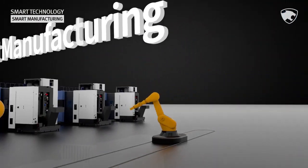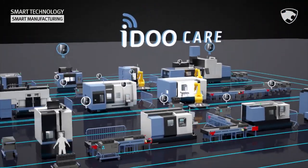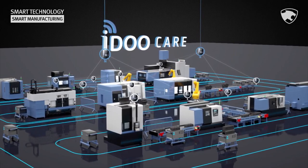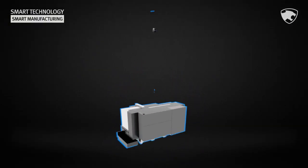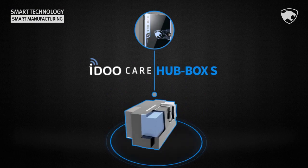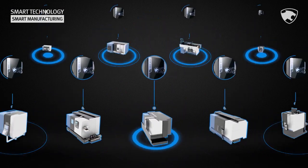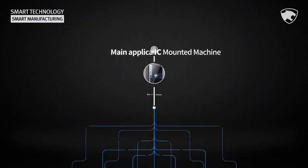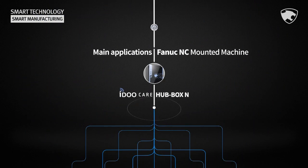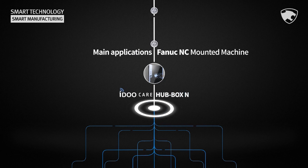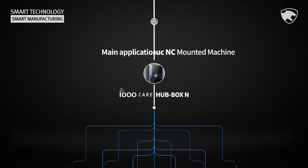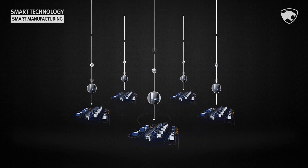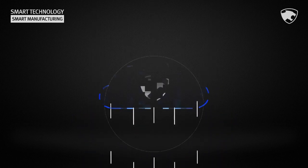Smart manufacturing of Doosan Machine Tools is completed with the iDoCare solution. iDoCare's HubBox S collects real-time equipment data to diagnose the condition of equipment. Equipment data is encrypted through HubBox M, which provides remote communication functions through HubBox S and is directly linked to the cloud of Doosan Machine Tools.